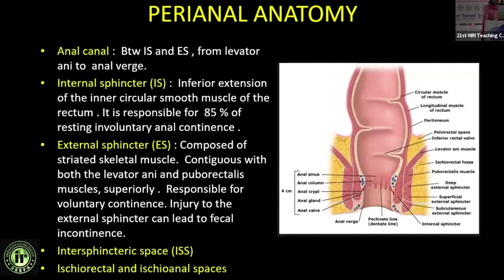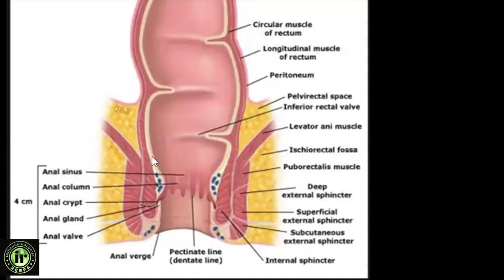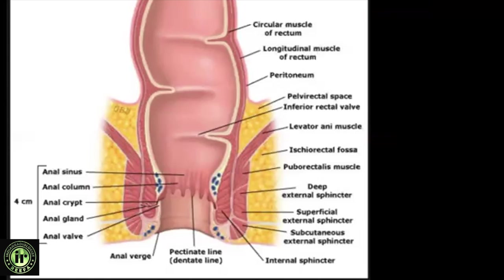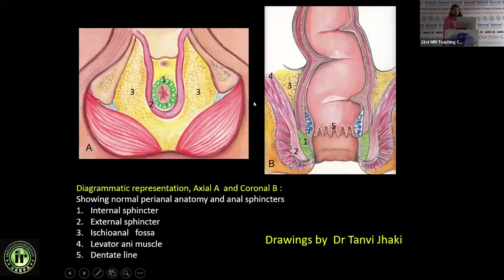The anal canal is the structure between internal and external sphincters on either side, extending from the level of the levator ani to the anal verge. The internal sphincter is an extension of the inner circular muscle of the rectum. The external sphincter is a condensation of the levator ani. Between these two sphincters is the inter-sphincteric space, which is the fulcrum of reporting in MRI fistulography. By the sides are the ischio-anal and ischio-rectal spaces.